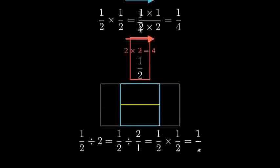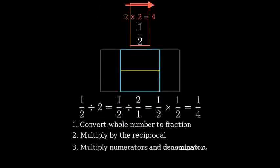So one half divided by two equals one fourth. Remember the steps. First, convert the whole number to a fraction. Then, multiply by the reciprocal of the second fraction. Finally, multiply the numerators and denominators to get your answer.